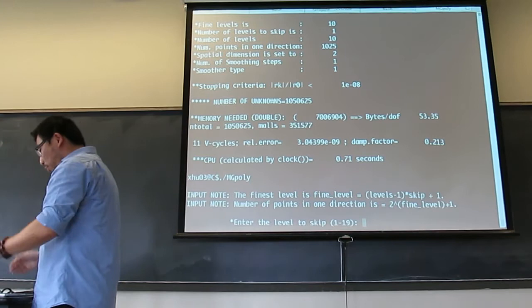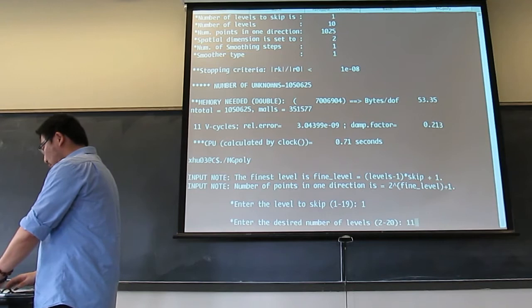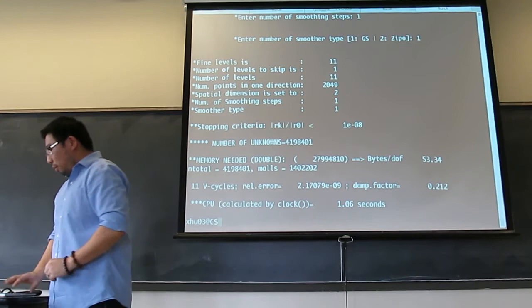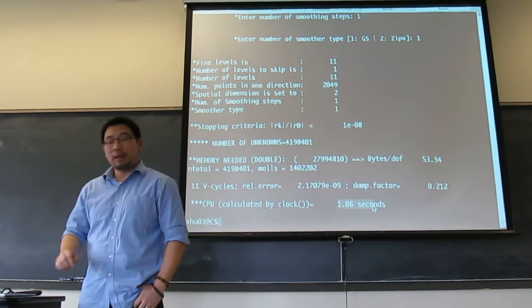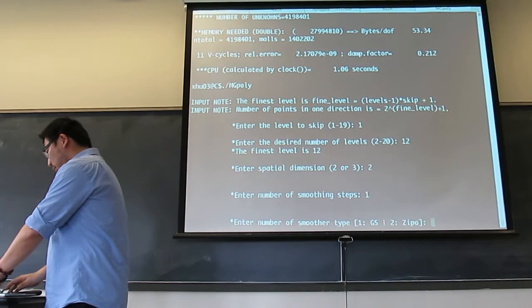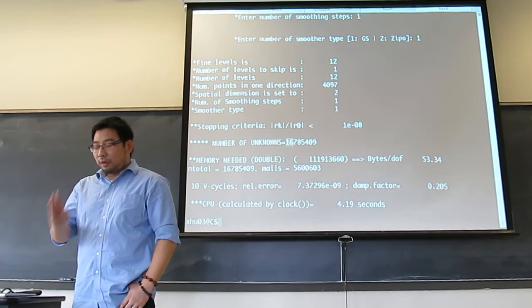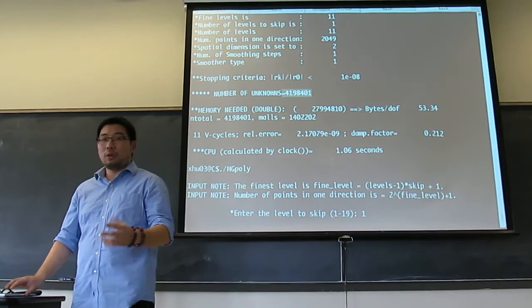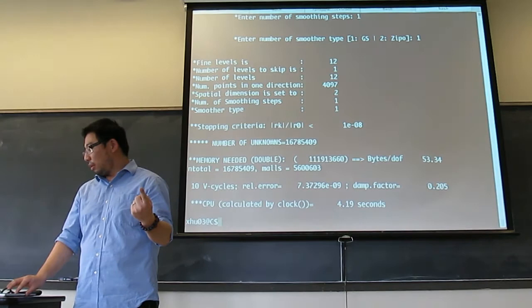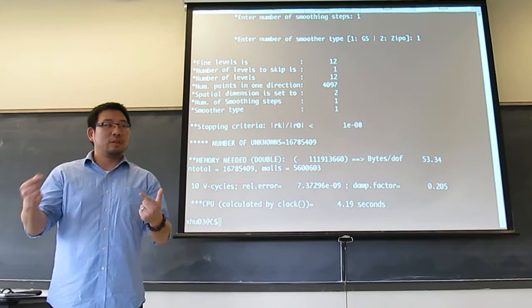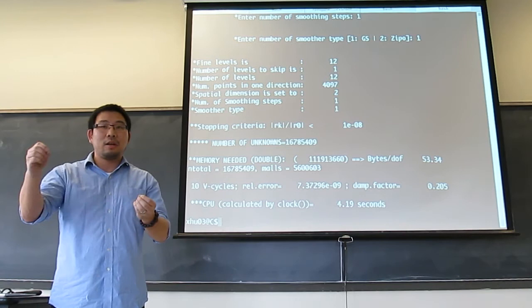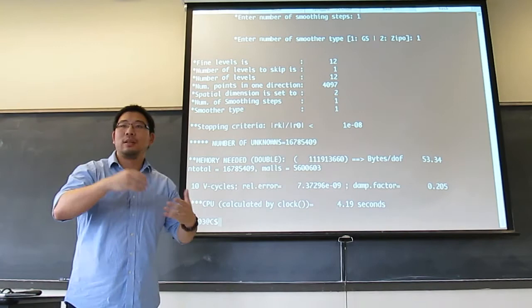If I go to bigger problems — the level before was 10, that's 2 to the 10, 2 to the 11. Solving a 4 million problem takes about one second. Solving a 60 million problem takes about four seconds. The size is four times larger, the CPU time is four times longer — it scales linearly with respect to the size.